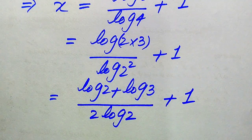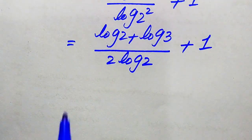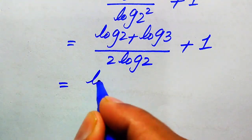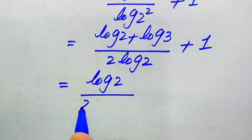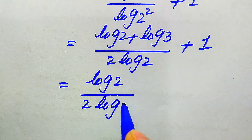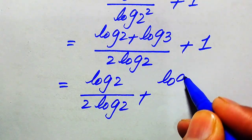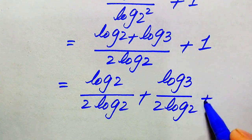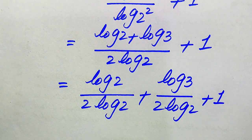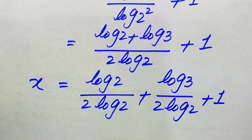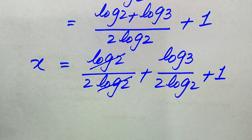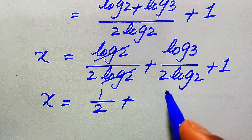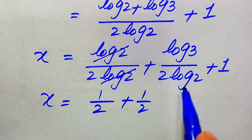We break this fraction and apply 2 log 2 separately on both terms. It becomes log 2 divided by 2 times log 2, plus log 3 divided by 2 times log 2, plus 1. You see that this log 2 and this log 2 cancel out, and we get x equals 1 over 2 plus...